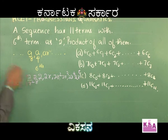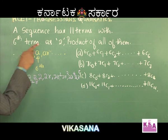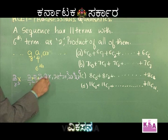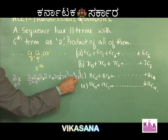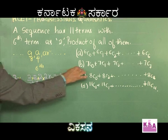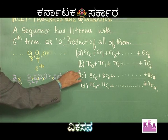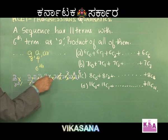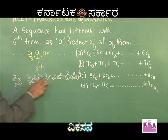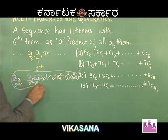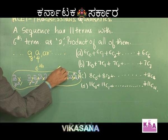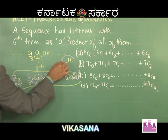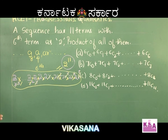Now the product of all 11 terms means multiplying all of them together. You can observe that R⁵ cancels with 1/R⁵, R⁴ cancels with 1/R⁴, R³ cancels with R³, R² cancels with R², and R cancels with R. What remains is 2 multiplied 11 times, which equals 2^11.